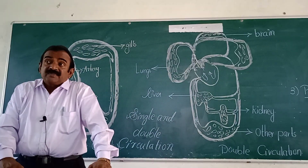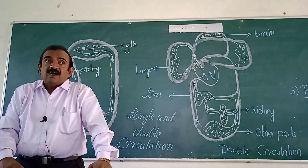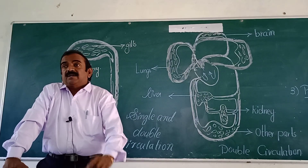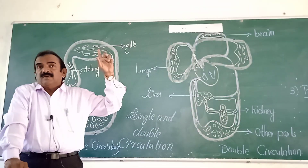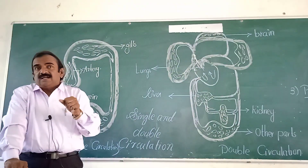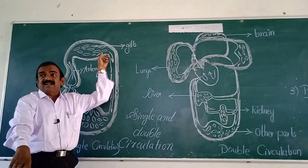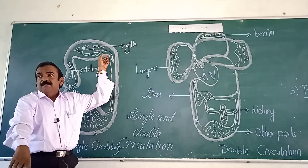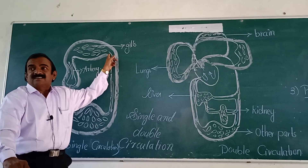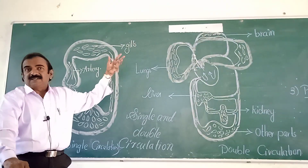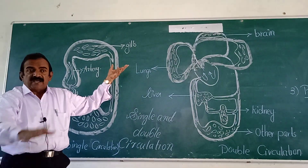Heart to gills, gills to body parts, body parts to heart, heart to gills — like that there is circulation of blood in the fish heart. That is called single circulation. And this circulation is also called single circuit circulation. Gills are also called branchia, so respiration with the help of gills is called branchial respiration — the respiration performed by fishes.